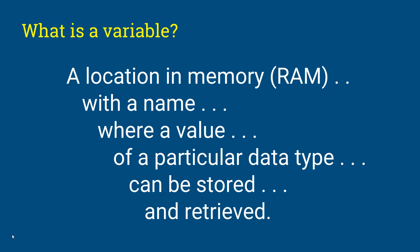A variable is a location in memory where a value of a particular data type can be stored and retrieved. So if I want to store someone's salary, I tell the interpreter 'give me some memory to store a salary.' I give the variable the name 'salary.' The interpreter says 'great, how much memory do you want?' and then asks the operating system for that amount.